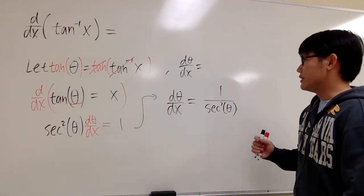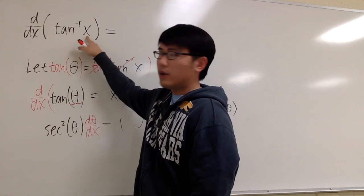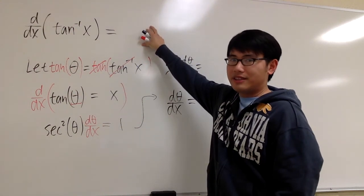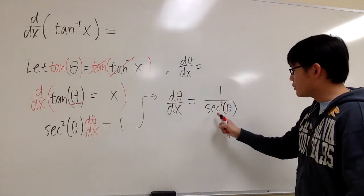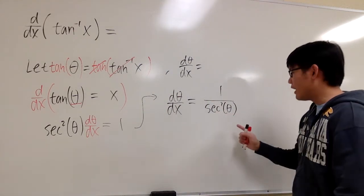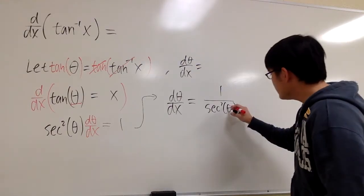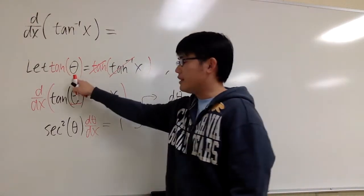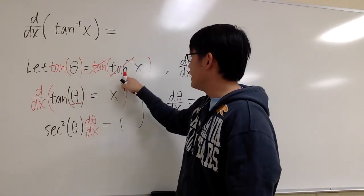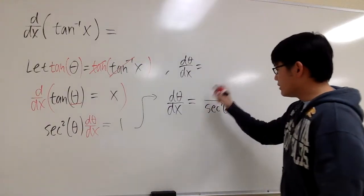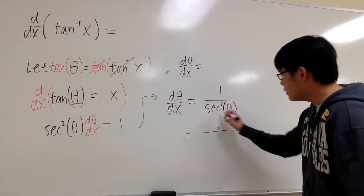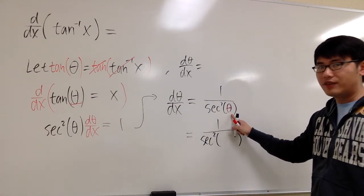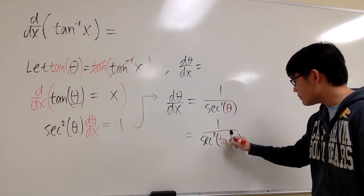However, the deal is this. If the original formula was written in terms of x, our answer should also be in terms of x. Here it's a formula, but in terms of theta. So now we have to make more connections. Let's focus on this theta right here. As we can see from the beginning, we say that theta equals the inverse tangent x. So this expression is the same as saying 1 over secant squared inverse tangent x.